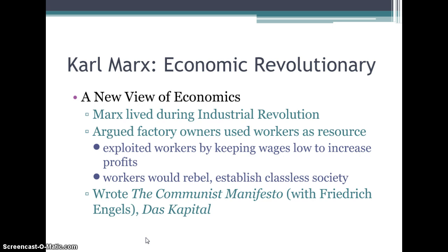Karl Marx had a lot of influence on socialist and communist type governments established in the early 1900s. He lived during the industrial revolution and thought factory owners used workers as a resource, exploiting them by paying such low wages while the factory owners made so much profit. He thought the workers should rebel and establish a classless society. He wrote a famous book called The Communist Manifesto with a gentleman named Frederick Engels, and another book called Das Kapital.